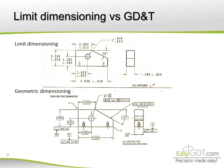Limit dimensioning versus GD&T. Here are two ways to define a part in a drawing. At the top we see the limit dimensioning method, when a part is defined only with horizontal and vertical dimensions. At the bottom we see the geometric dimensioning method, which is based on geometric controls, basic dimensions and datums.